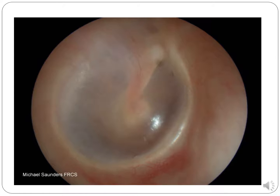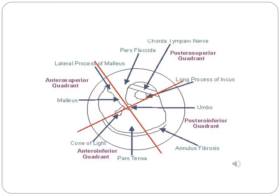Here's an example of a normal tympanic membrane — you can see the landmarks, a light reflex, and a few blood vessels visible along the landmarks. There's mild injection but it's essentially a normal tympanic membrane. This diagram of the structures behind the tympanic membrane helps you describe abnormalities: injection along the malleus, scar tissue below the umbo, or perforation in the pars tensa.